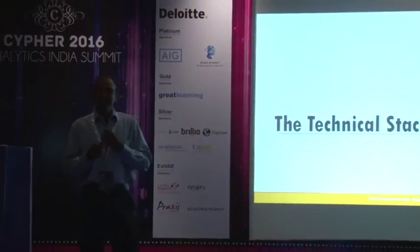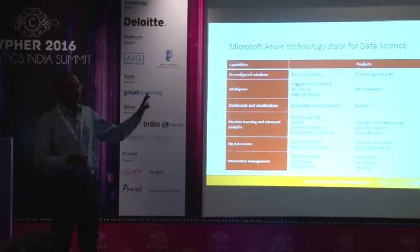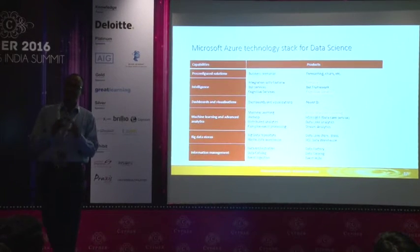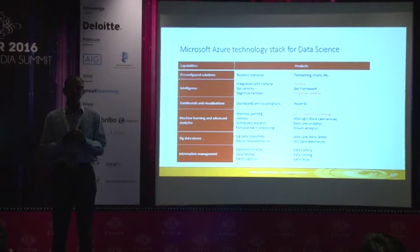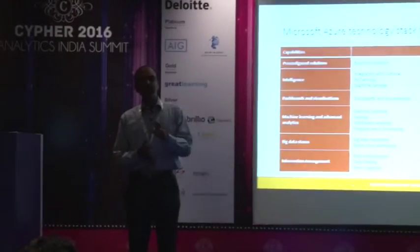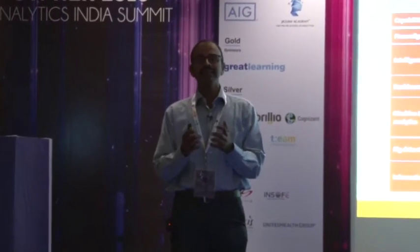Before getting into the technical stack, let's think through what we are trying to do here. In the digital world you are swamped with data, and from a technology standpoint you have a lot of choices — so where do you start? Start with your primary business objective, the one requirement that's bothering your organization. It could be: only 20% of customers click on my email campaigns — I want to increase that to 30% or 40%.